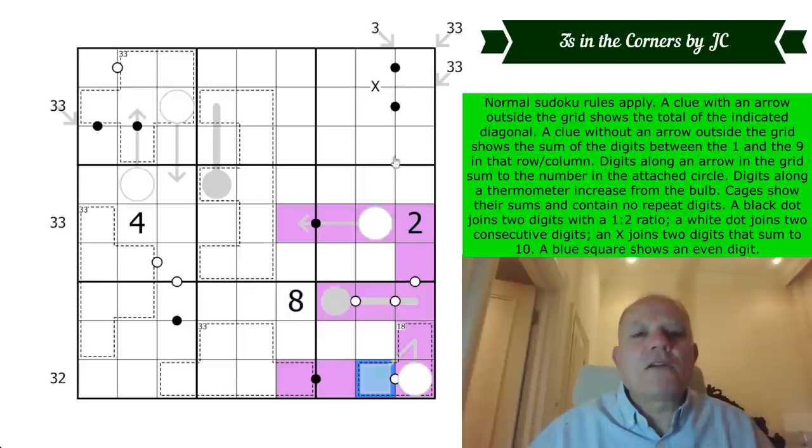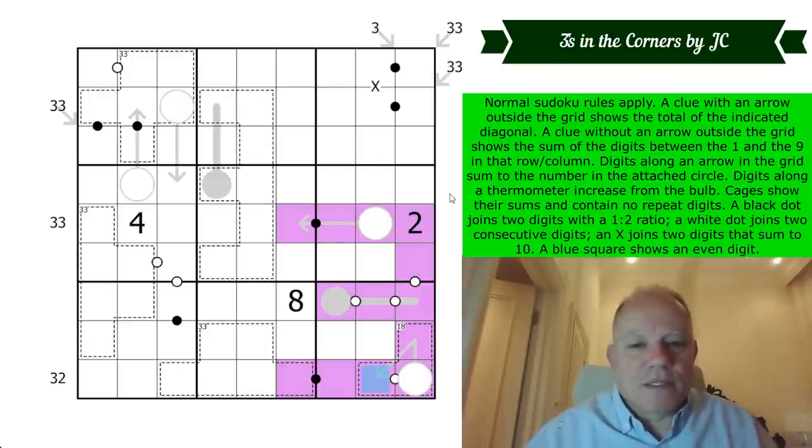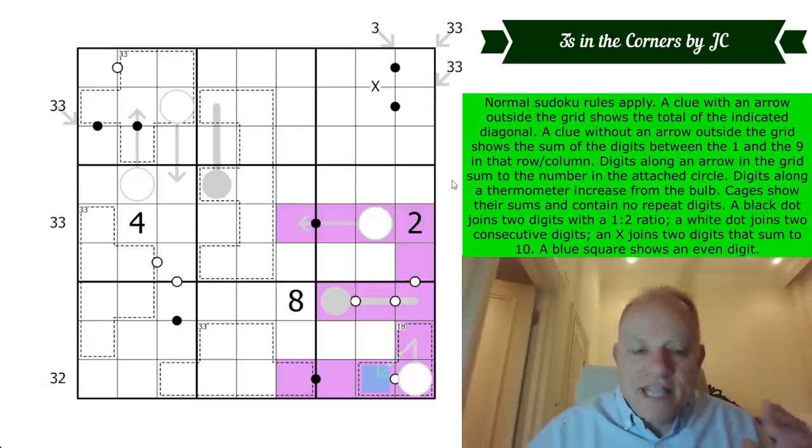A white dot joins two consecutive digits. So you could have one and two there. An X joins two digits that sum to 10. So those two sum up to 10. And a blue square shows an even digit. So a ton of rules to learn to do this puzzle. But on the other hand, if we can pick, oh, the purple colouring is for no reason other than decoration to show another three in the corner. So there we go. That's what's going on in this puzzle. Do give it a try if you're happy with all those rules. And do let me know what you find about it in the comments. Thank you to JC for coming up with it. As I say, not a recommended format, but we're going to give it a go as a one off. I'm going to start now. Let's get cracking.